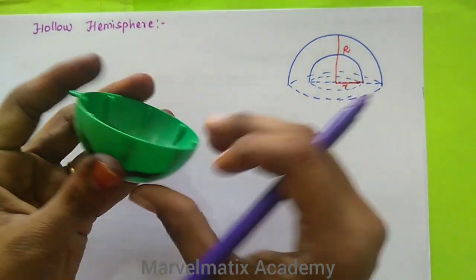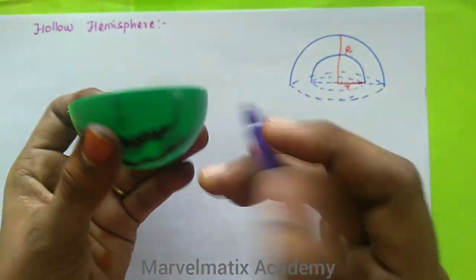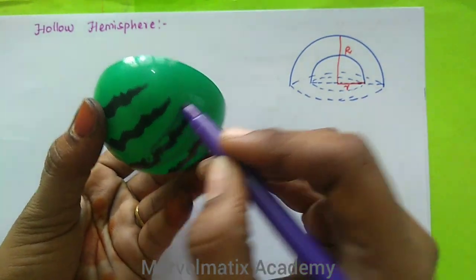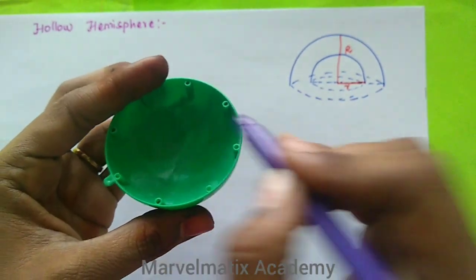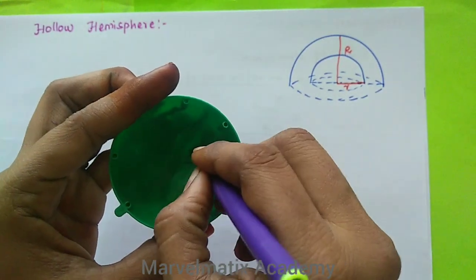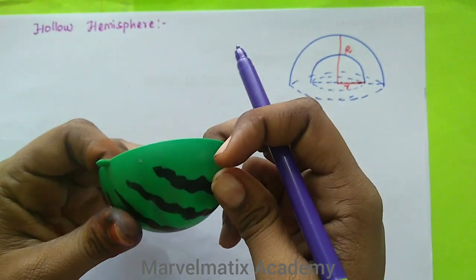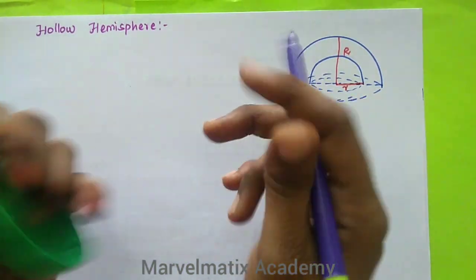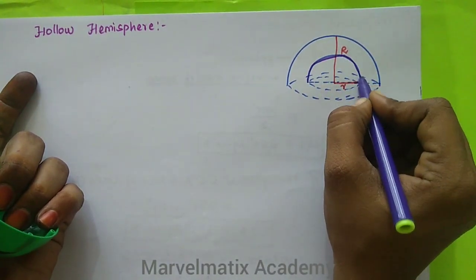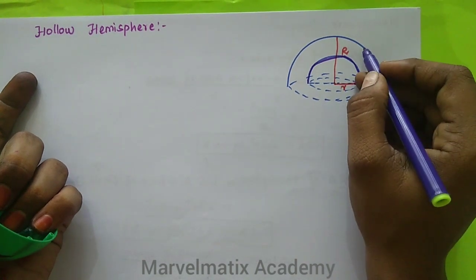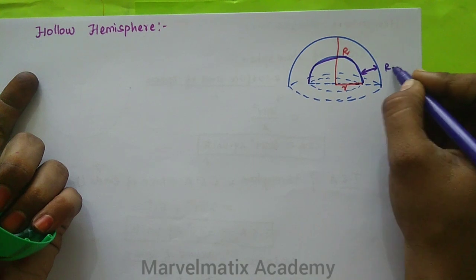So we are going to look at the hollow hemisphere. The thickness is going to be here. So at the top we have the square root R — this is small r and capital R. This is the thickness, which is R minus r.